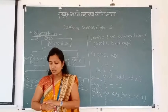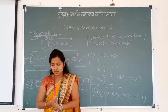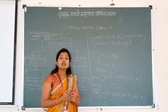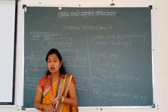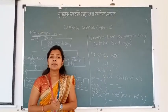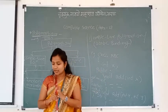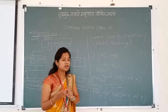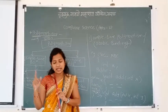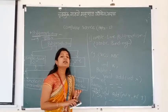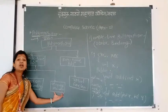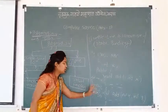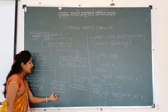This is compile time polymorphism. First point: compiler is able to select the appropriate function at compile time. Second: the decision is taken on the basis of number of arguments and their data types in the function call, not at runtime. Third: compile time polymorphism is also called static binding, static linking, or early linking. Fourth: it can be implemented using function overloading and operator overloading.